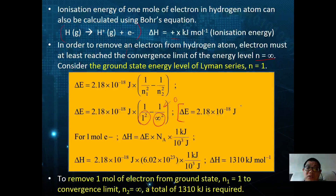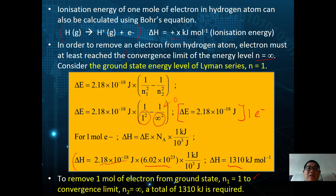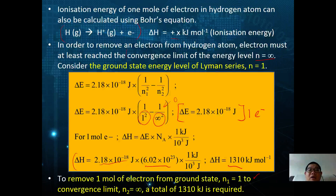Since one mole of electrons contains 6.02 × 10²³ atoms, the ionization energy is: ΔH = 2.18 × 10⁻¹⁸ J × 6.02 × 10²³ × (1 kJ / 1000 J) = 1310 kJ/mol. This means that to remove one mole of electrons from the ground state (n = 1) to the convergence limit (n = ∞), a total of 1310 kJ is required. That concludes the hydrogen atom topic — we'll continue in the next lesson about orbitals.